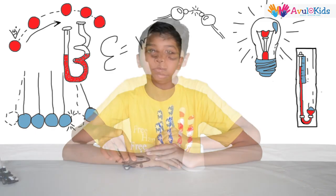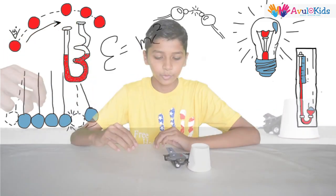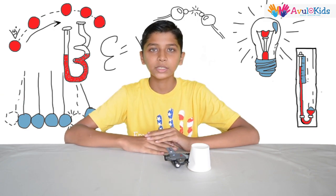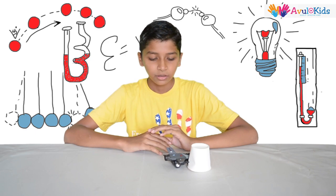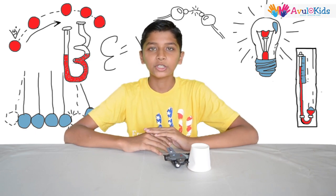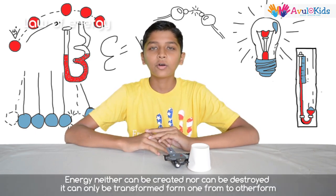Moving water and wind are examples of kinetic energy. The plane with kinetic energy hits the cup with potential energy, which forms mechanical energy. Plane is back in steady state, means it has got potential energy. According to the law of energy, energy neither can be created nor can be destroyed. It can only be transformed from one form to other form.